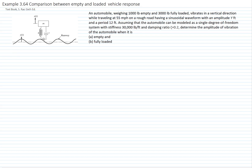When the vehicle is empty it weighs 1,000 pounds. This allows us to find the mass of the vehicle. The mass is equal to the weight divided by gravity. With gravity equal to 32.2 feet per second squared, that gives us a mass of 31.056 pounds·second² per foot.